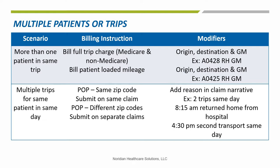For multiple trips for the same patient on the same day, if the zip code for multiple trips is the same point of pickup, then more than one ambulance trip can be reported on the same claim. If different zip codes, prepare a separate claim for each trip. It's possible that the second claim may be denied as a duplicate, so utilize your appeal rights within the 120 days.